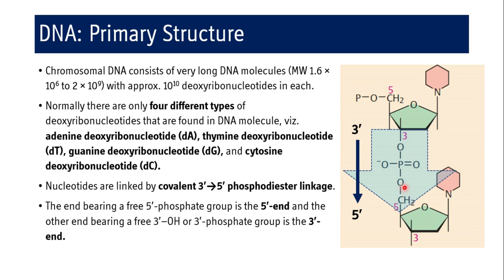The end bearing a free 5' phosphate group is the 5' end of the DNA strand, where the fifth carbon atom of the deoxyribose is free. The other end, bearing a free 3'-OH or 3' phosphate group, is the 3' end of the DNA strand.